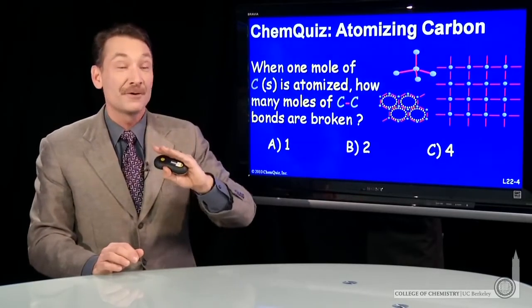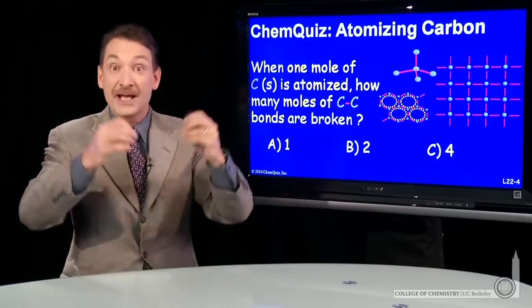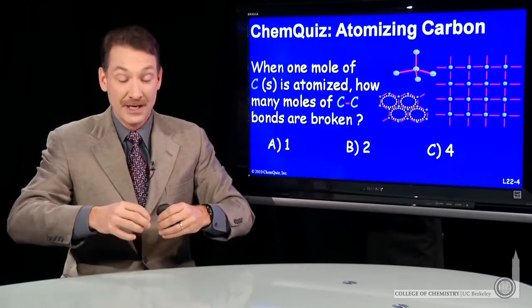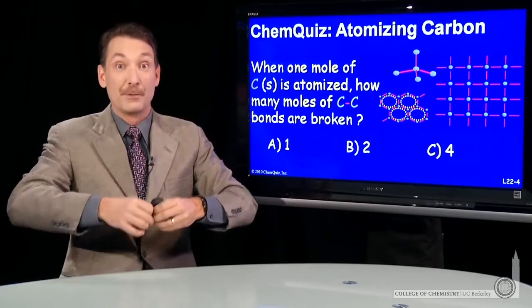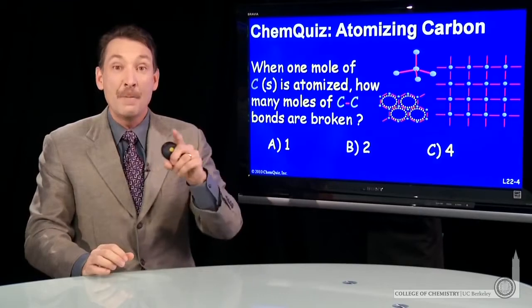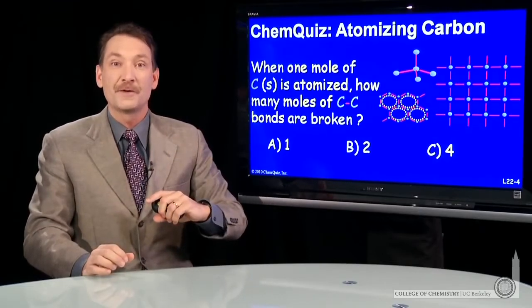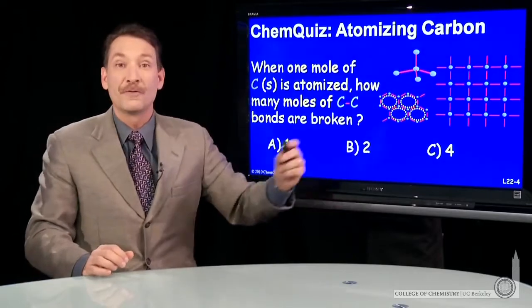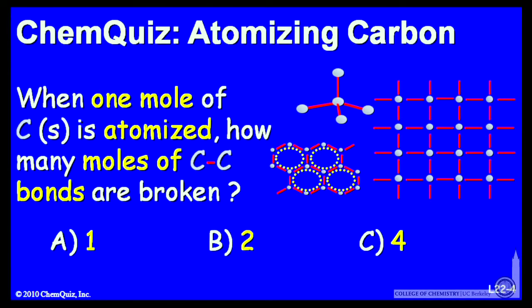The question I have for you, if I go from this solid carbon and I break those carbon-carbon bonds, and that requires energy, I'm going to have to put in a lot of energy to break carbon-carbon bonds and make atomic carbon, how many carbon-carbon bonds do I have to break per carbon atom released? Is it one, two, or four? Think about that for a minute and make a selection.